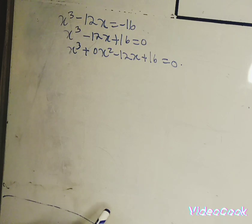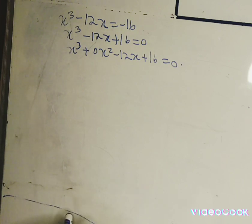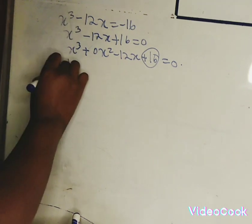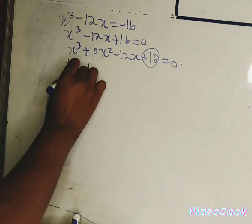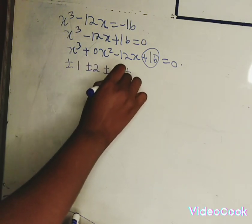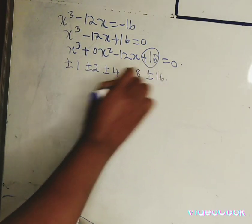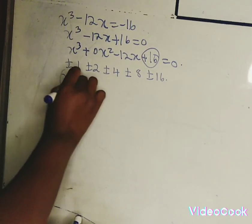The first step is to find the factors. To find one factor of this equation, we look at plus 16. The factors of 16 may be plus or minus 1, plus or minus 2, plus or minus 4, plus or minus 8, plus or minus 16.